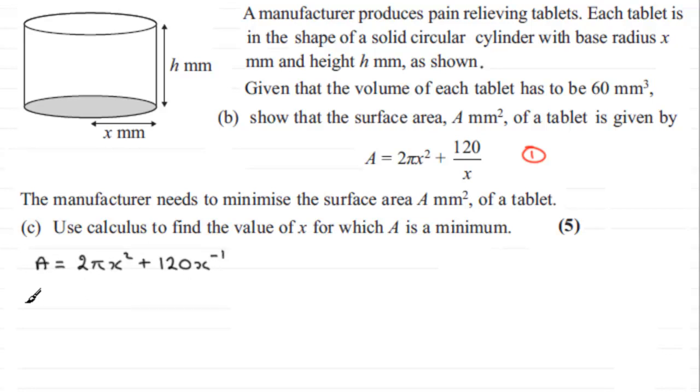Now we need to differentiate this in the usual way. And that is that for terms like this all we do is multiply the power with the value in the front and subtract 1 from the power. So we've got 2 times 2π which is 4π. Reduce the power by 1 so that's x to the power 1 or just leave it as x.